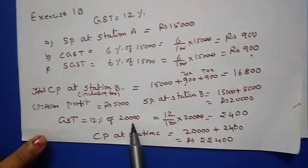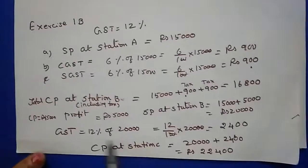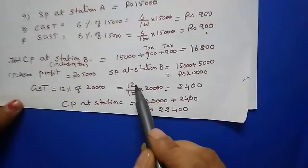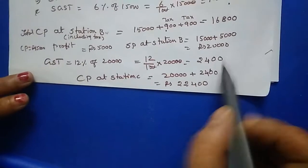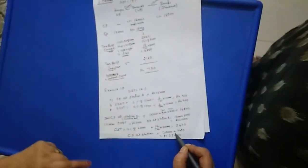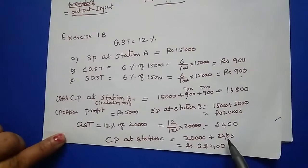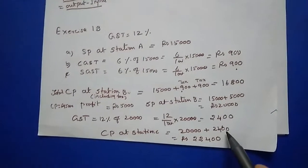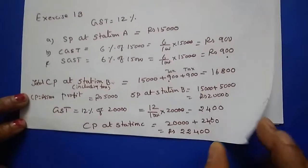GST for Station B selling price: since it is interstate, 12% directly. 12% of 20,000 = 2,400. Therefore CP at Station C = SP of B + tax = 20,000 + 2,400 = 22,400 rupees.